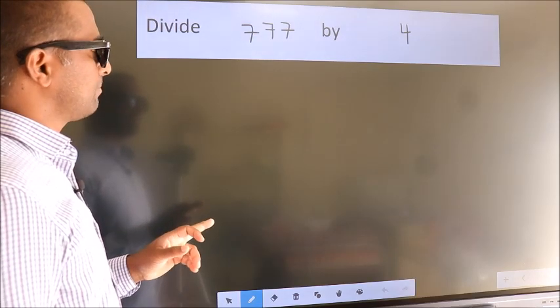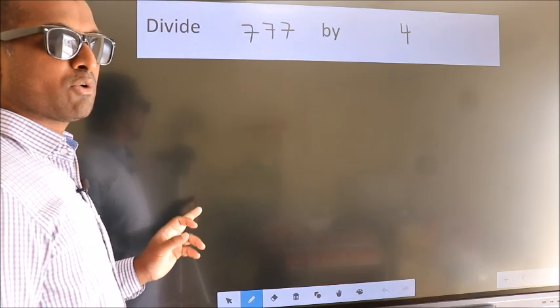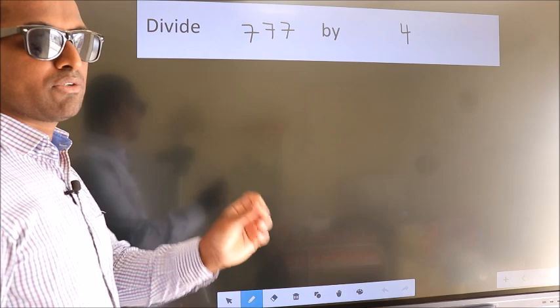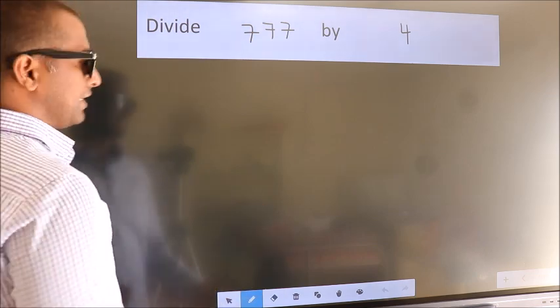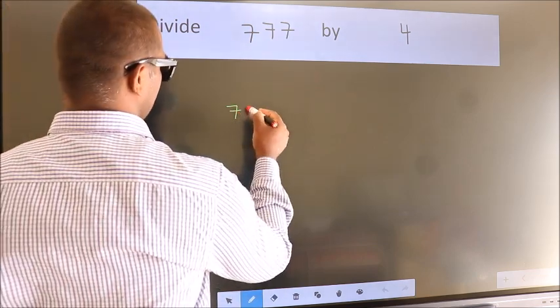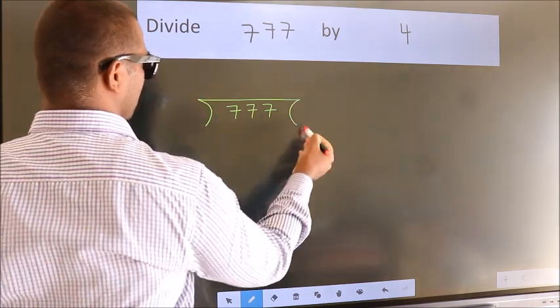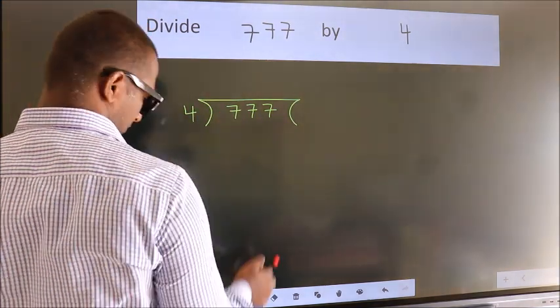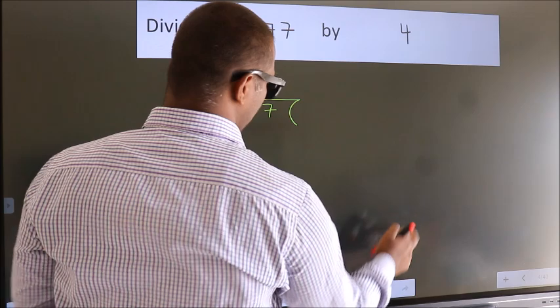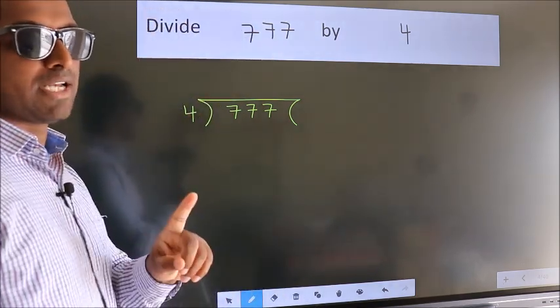Divide 777 by 4. To do this division, we should frame it in this way. 777 here, 4 here. This is your step 1.